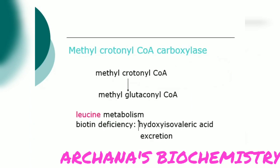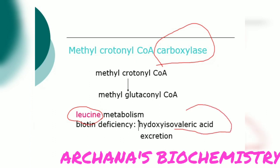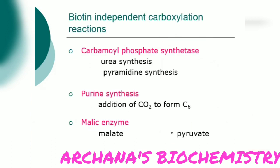Methylcrotonyl-CoA carboxylase converts methylcrotonyl-CoA to methylglutaconyl-CoA; this is seen in leucine metabolism. Leucine is a branched-chain amino acid — valine, leucine, and isoleucine are all branched-chain amino acids — and they involve one carboxylation step. When biotin is deficient, this reaction will not occur, and there will be increased levels of hydroxy isovaleric acid excreted in the urine.